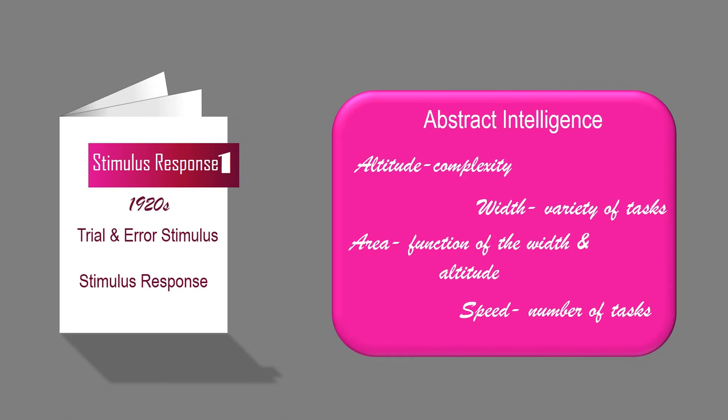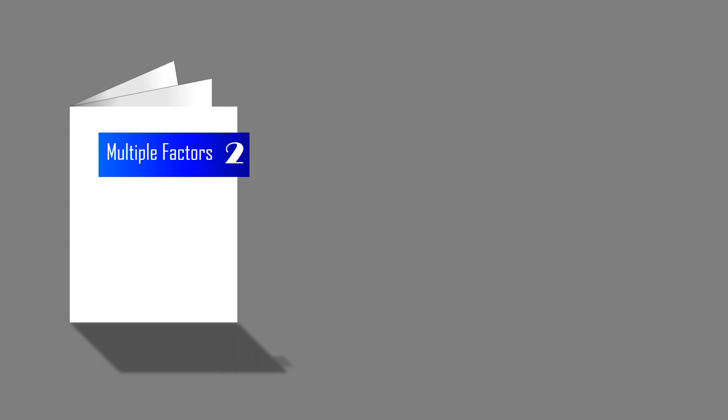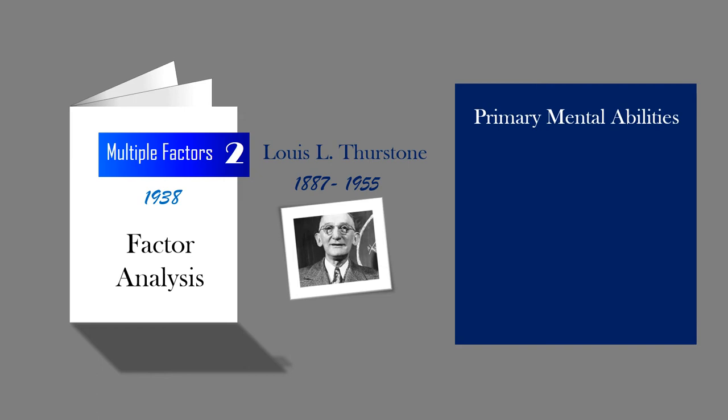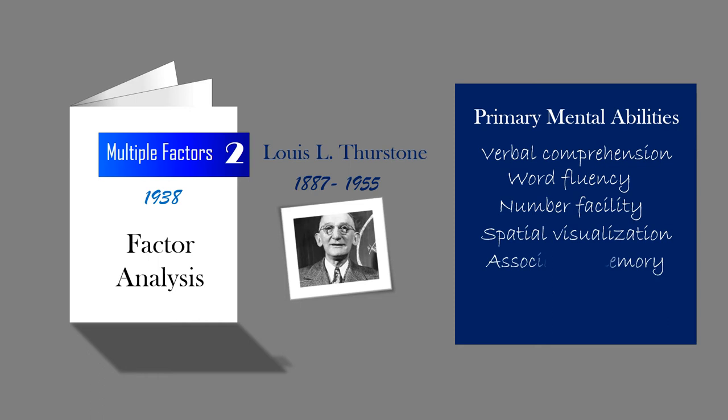Thurstone's Multiple Factors Theory of Intelligence, 1938. Lewis L. Thurstone was an American psychometrician from 1887 to 1955 who studied intelligence tests and tests of perception through factor analysis. His theory stated that intelligence is made up of several primary mental abilities rather than a general factor and several specific factors. His multiple factors theory identified seven primary mental abilities: verbal comprehension, word fluency, number facility, spatial visualization, associative memory, perceptual speed, and reasoning. He developed the test of primary mental abilities in 1938.